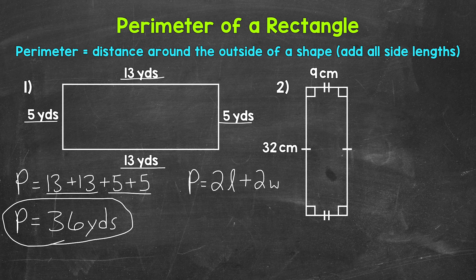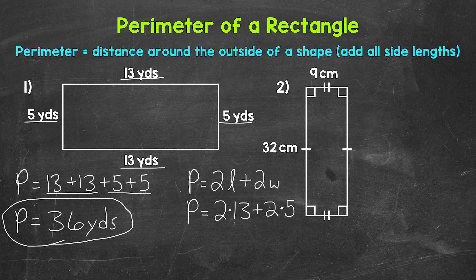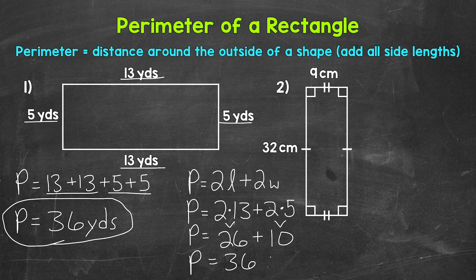I'm going to use the longer side for the length — 13 — and then 5 for the width. So perimeter equals 2 times 13 plus 2 times 5. Remember, we always multiply before we add. 2 times 13 gives us 26, plus 2 times 5 gives us 10. 26 plus 10 gives us a perimeter of 36 yards.